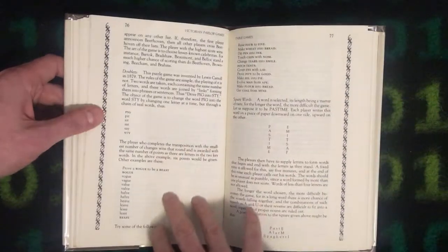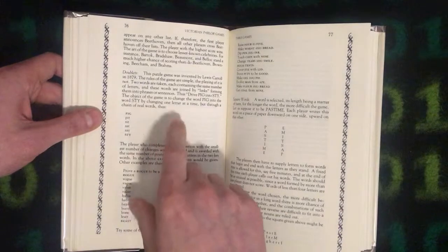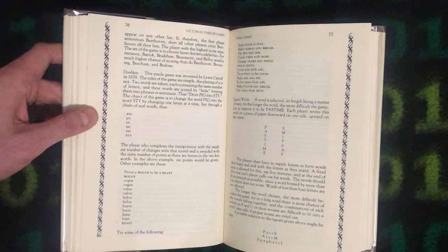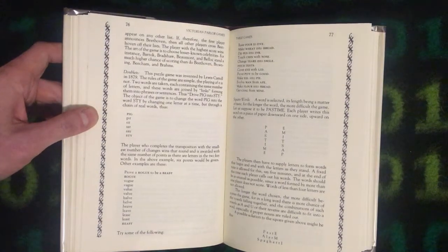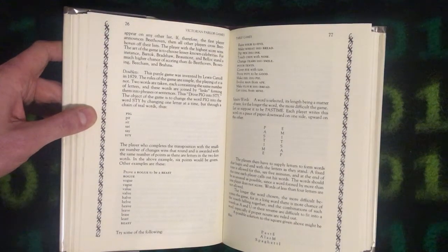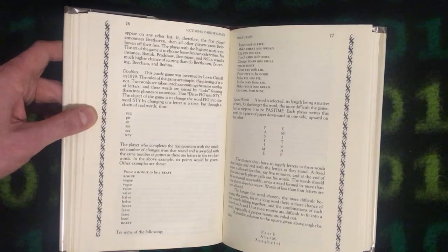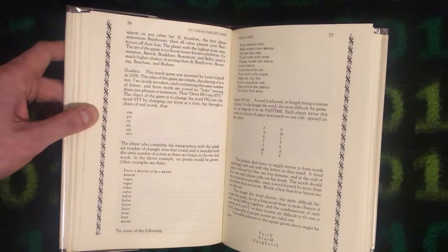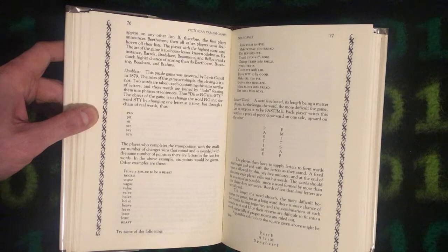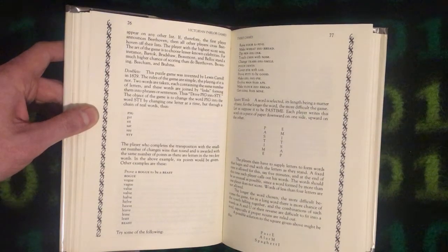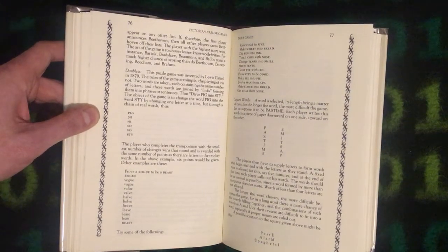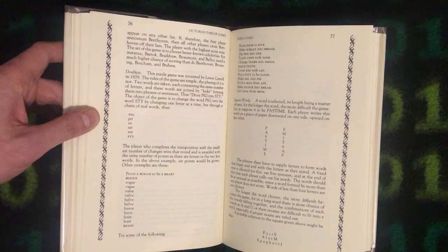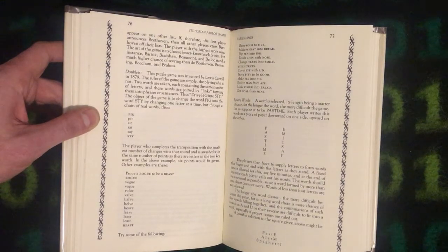Pencil and paper games. Doublets is interesting. This puzzle game was invented by Lewis Carroll in 1879. The rules of the game are simple. The playing of it is not. Two words are taken each containing the same number of letters. And these words are joined by links forming them into phrases or sentences. Thus drive pig into sty. The object of the game is to change the word pig into the word sty by changing one letter at a time, but through a chain of real words.